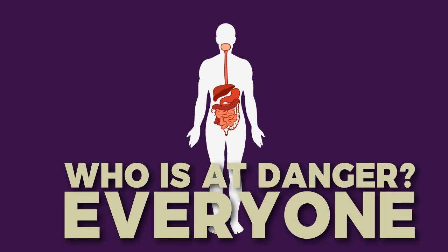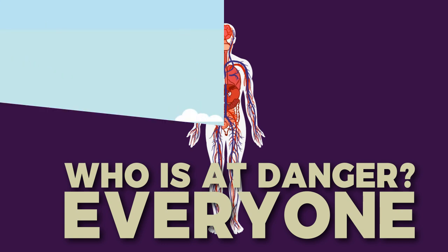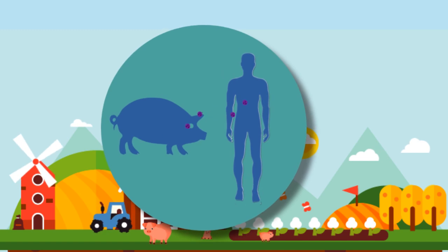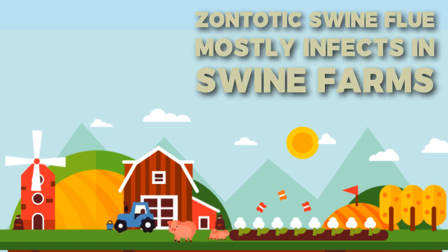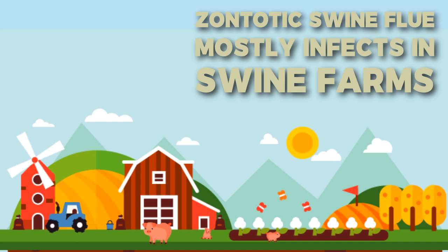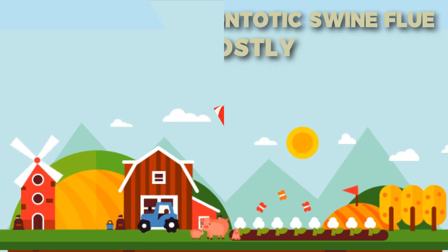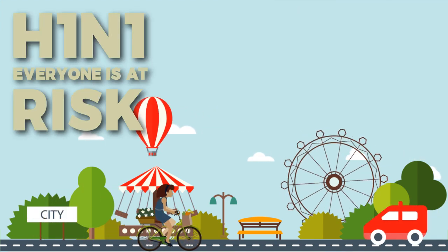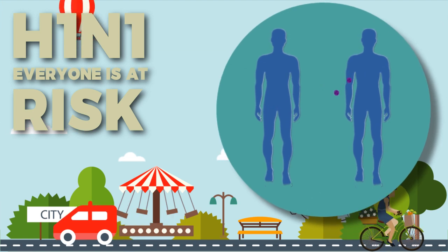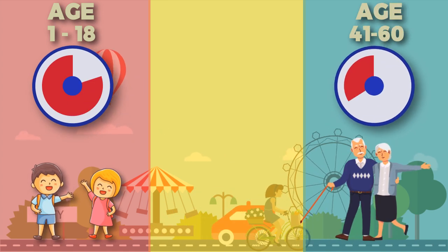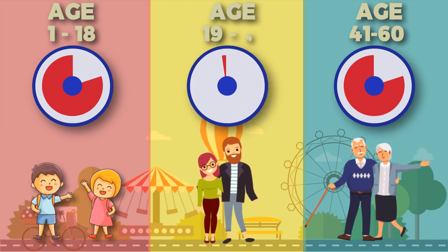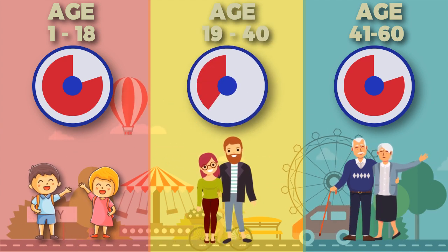So who is at danger and can get infected by swine flu? Basically anyone can get infected. The zoonotic swine flu, which only transfers from pigs to humans, puts people who work in swine farms or veterinary facilities at risk — and that can be prevented by vaccination. But when it comes to H1N1, everyone is at risk because it spreads from human to human. However, fatalities are more likely in young children and the elderly; if your age is between 19 and 40, you are comparatively less likely to die even after infection.